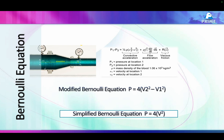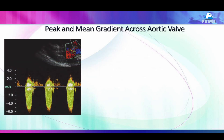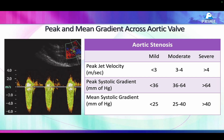The peak velocity gives us the gradient, and that's how we assess aortic valve area. Here is another CW jet — the velocity is about six meters per second, indicating severe aortic stenosis. Grading: mild is when peak velocity is less than three meters per second, moderate is three to four meters per second, and severe is when the velocity exceeds four meters per second. Here it is six meters per second, so this is severe.